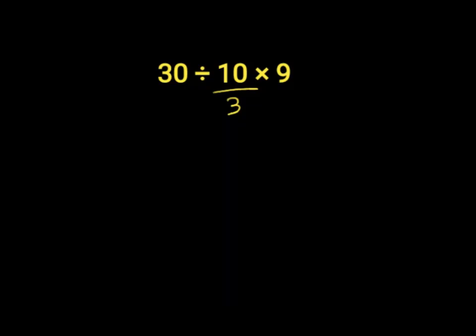30 divided by 10 over 3 times 9. Let's first try an incorrect approach: 3 into 3, we are left with 30 divided by 10.